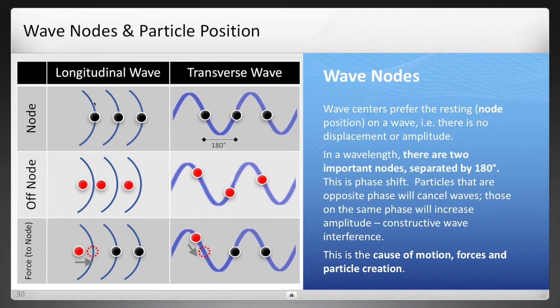And there are two different types of waves, longitudinal and transverse. So the diagram here shows black particles, wave centers, which are at node, meaning that it is at the point of minimal amplitude. It's at its equilibrium or resting place. Off node, or red that you see there for the two different types of waves, will have a force. And that wave center will move to the point of minimal wave amplitude. And in the upcoming videos, we're going to find that that's the cause of all motion, all forces. And it's also the cause of particle creation. Again, wave centers move to the point of minimal wave amplitude. That's a fundamental rule.